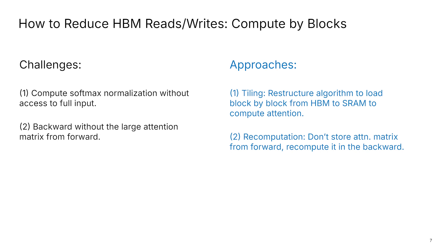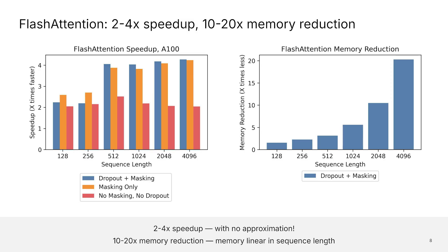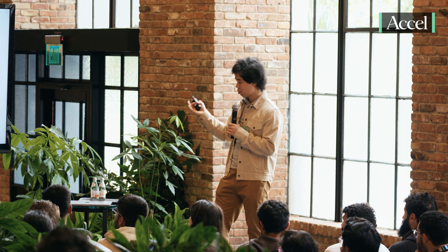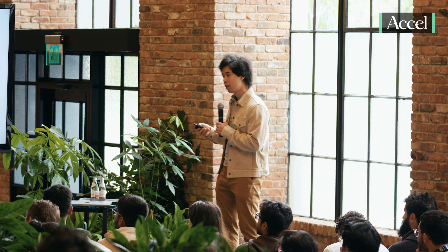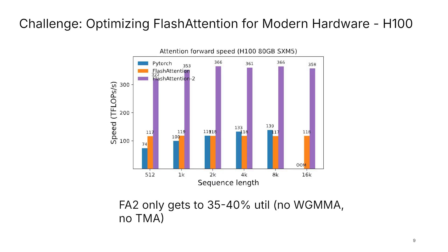Flash Attention came out about two years ago. Back then, it was about 2 to 4x speedup over the best baseline, and significant memory reduction, so you can scale to much longer sequences. This was essentially optimized for A100. When we took that code — this is Flash Attention 2 — and ran it on H100, we got to about 350 teraflops per second. The H100 max is around 1,000, so it's about 35% of what the device is capable of.